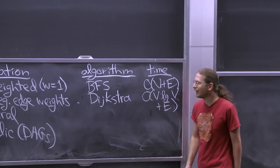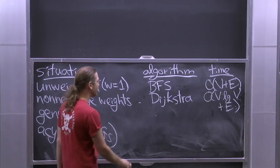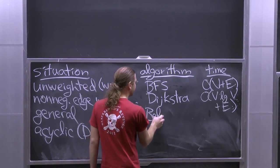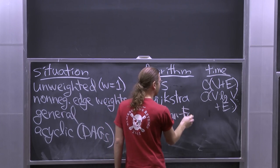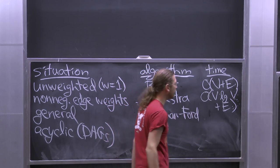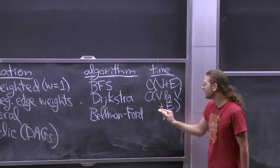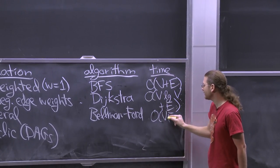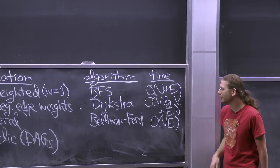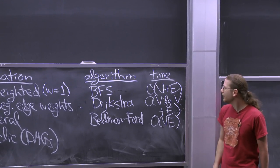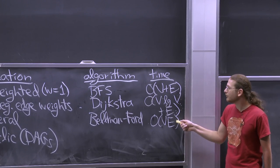For general weights, you use Bellman-Ford, which takes O(VE). Technically you should assume VE is at least V for this bound to hold. This is a lot slower. If E is Θ(V) — a very sparse graph like a tree or planar graph — we get V squared. And if E is quadratic, the dense case, we get V cubed for Bellman-Ford.